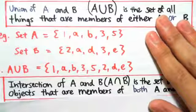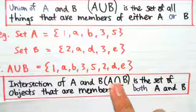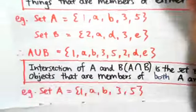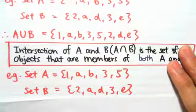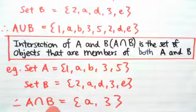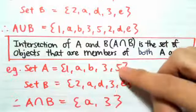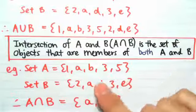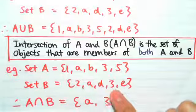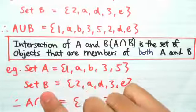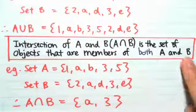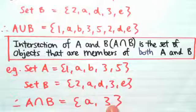The intersection of A and B, denoted A∩B, is a set of objects that are members of both A and B — so they need to be common. Going back to our example of set A and set B, set A∩B looks at members that are common between set A and set B. The members that are common are only A and 3, because A is in set A and also in set B, and 3 is in set A and also in set B. Those are the only two members common between the sets.